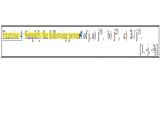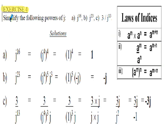Exercise 4: simplify the following powers of j. Part a: j to the 16. Part b: j to the 23. Part c: 3 divided by j to the 13. I'd encourage you to pause the presentation and attempt these questions — answers are in the brackets. The solutions are very similar to Example 5. Note where j to the 4 has been used throughout. Also in part c, we didn't need to use the complex conjugate, because we end up with a denominator of j squared, which equals negative 1.